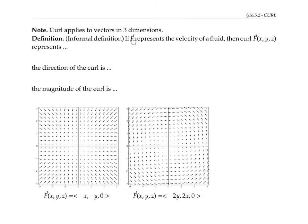Let's suppose that F represents the velocity of a fluid. Then the curl of F at a point (x, y, z) represents the net rotation of the fluid around the point (x, y, z).